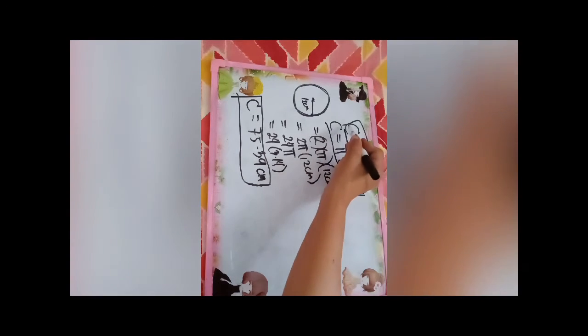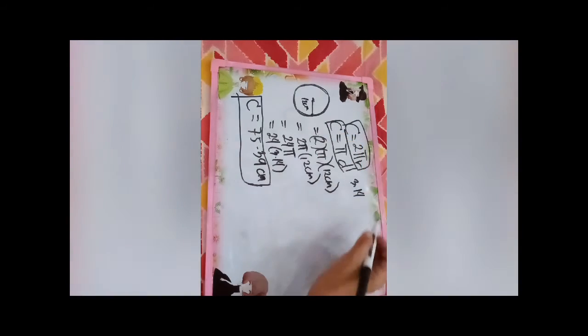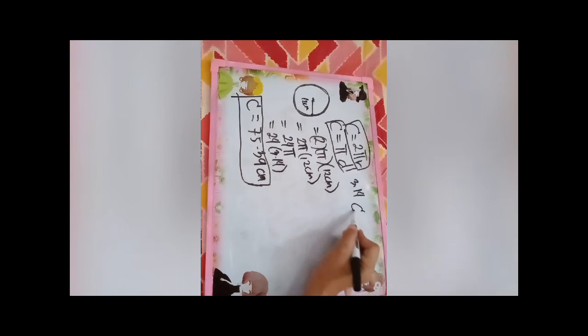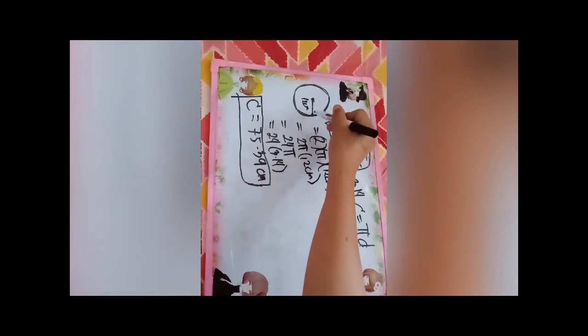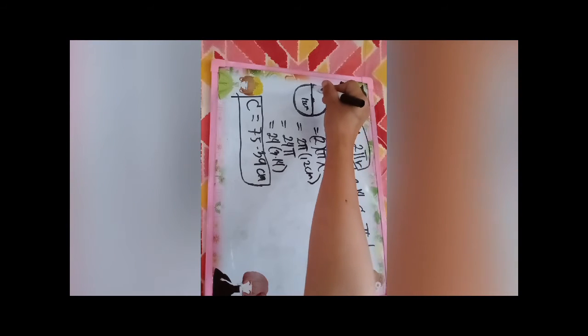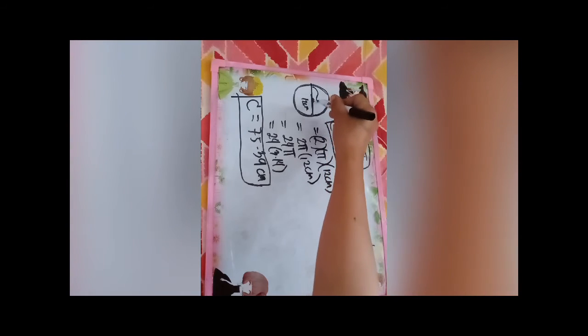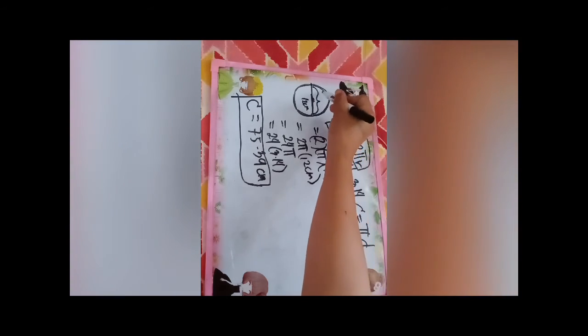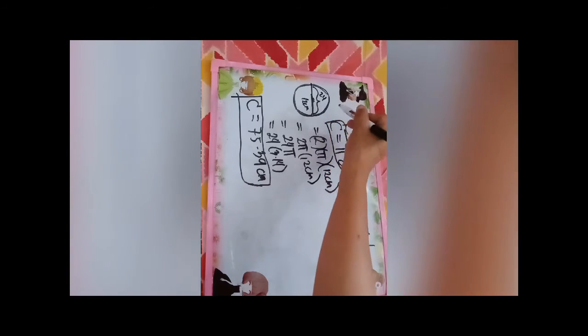So the circumference of this circle is 75.39 cm. Now, we use this formula in the same problem: π times the diameter. So the diameter is twice the radius. So from here to here, this is the diameter of a circle.